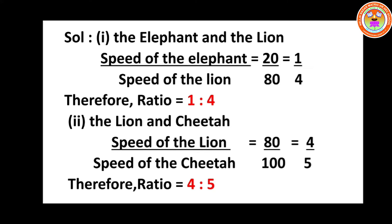Now the second subdivision — lion and cheetah. Speed of the lion divided by speed of the cheetah equals 80 divided by 100. Cancel the zeros to get 8 by 10, then divide both by 2: 4 by 5. Therefore the ratio is 4 is to 5.